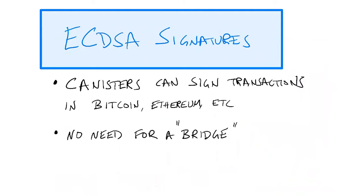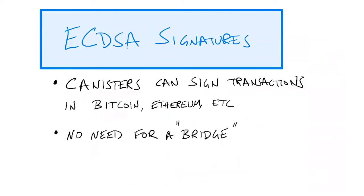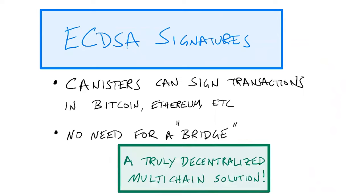By having decentralized ECDSA signing functionality on the Internet Computer, canisters on the Internet Computer can sign transactions on the Bitcoin and Ethereum blockchains, as well as many other blockchains. This is a big deal because now the Internet Computer will be able to talk to many other blockchains without the need for what's called a bridge. A bridge is currently used in the blockchain space to allow different blockchains to talk to one another, but there are security vulnerabilities in using a bridge that make them rather undesirable. By having truly decentralized signing functionality, we avoid all of the problems that bridges create from a security point of view — giving us a truly decentralized multi-chain solution that doesn't require a bridge.